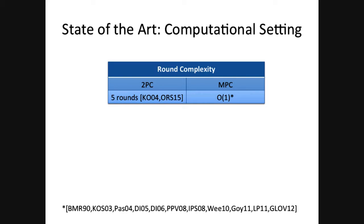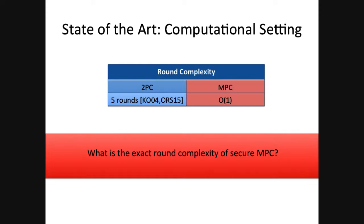In the two-party case, where two parties participate, we have a lower bound of five rounds by Katz and Ostrowski. But in the multi-party case, we don't have a bound — we only know protocols that run in a constant number of rounds, and a rough estimate is that current protocols run in 20 to 30 rounds. So I'm going to ask: what is the exact round complexity, and can we establish a bound?